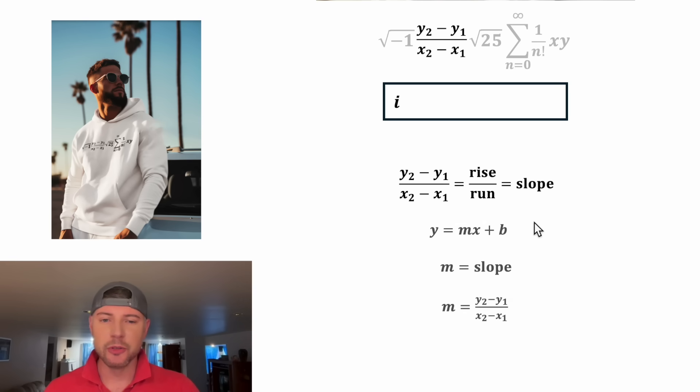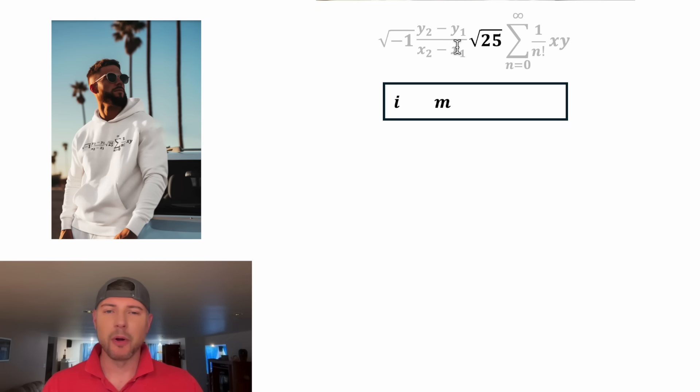And it's pretty common to use m to represent the slope. For example, in y equals mx plus b, m represents the slope. So in the place of this, we can plug in m. And then let's move on to the square root of 25. Square root of 25 equals 5. And this is only equal to positive 5, not negative 5. The square root always outputs the positive value. And now I think I know what's going on. This says I am 5.